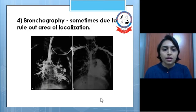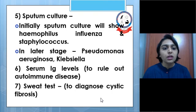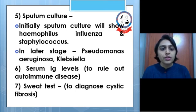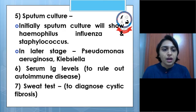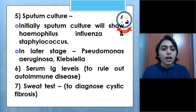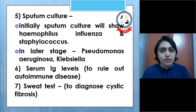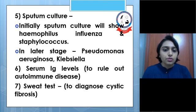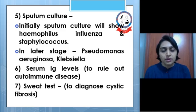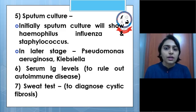This next image is the X-ray. Sputum culture: initially it will show Haemophilus influenzae and Streptococcus; in the later stage Pseudomonas and Klebsiella can also be found. Serum Ig levels are checked to rule out autoimmune disease like aspergillosis, and a sweat test is done to diagnose cystic fibrosis, since both conditions have somewhat similar X-ray images.